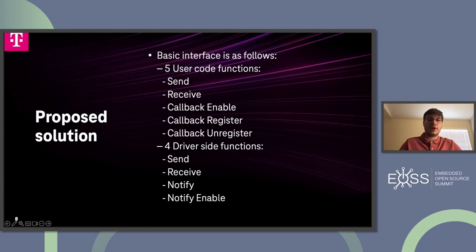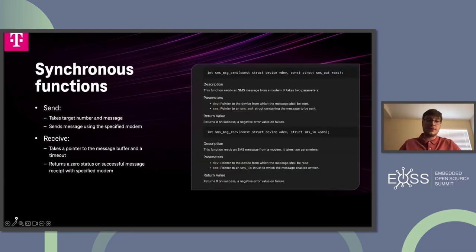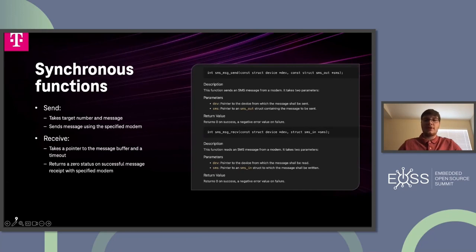Let's start with the user code synchronous functions — send and receive. Send is basically like how you send an SMS normally: you provide a target number as well as your message, and you specify which modem you'd like to send the message out on. Receive is also relatively basic — it takes a pointer to somewhere to write the received message, as well as a timeout. It's a blocking call that waits until either the timeout comes or you have received the message, at which point it writes to the buffer and returns a zero status indicating successful receipt. If it times out, you get a negative ETIMEDOUT.